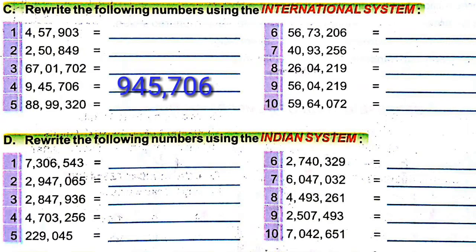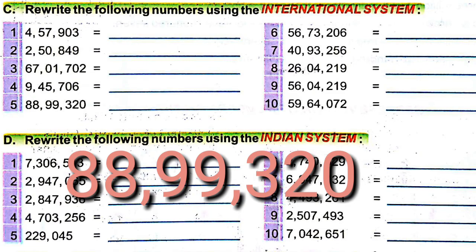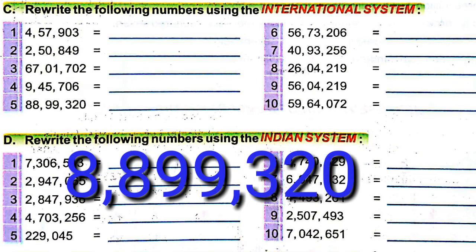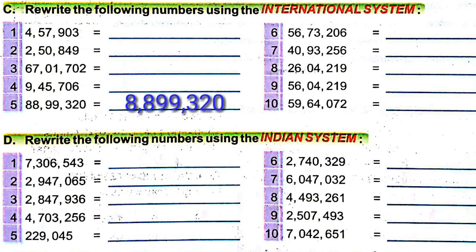The next given number is 88,99,320. There are seven digits. When we write in the international system, we give commas before three and six digits — that is between the first and second 8, and between 9 and 3. So the number is 8,899,320.